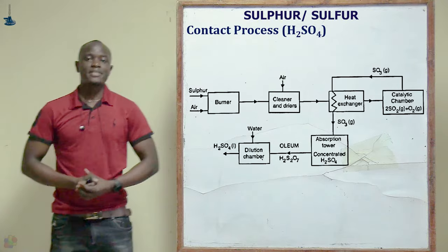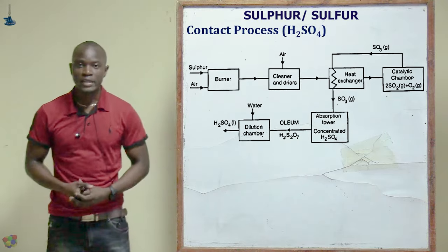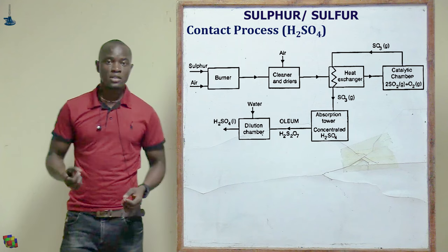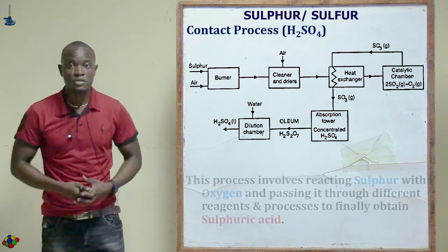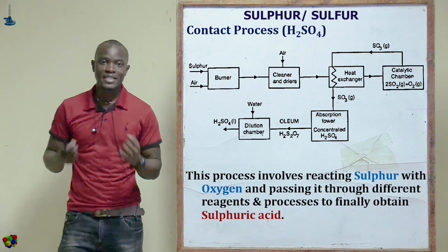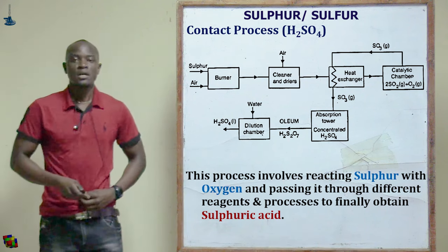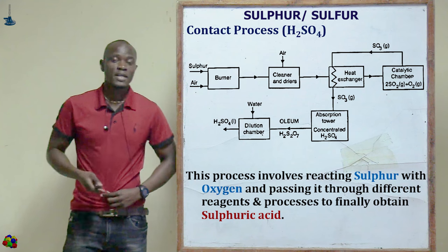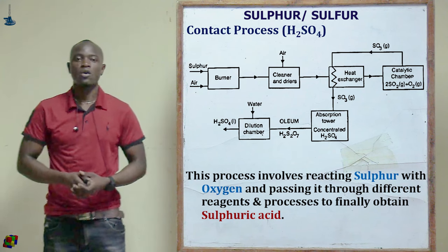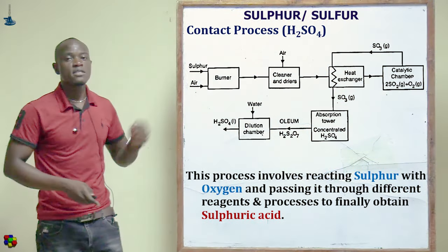Let's now look at large-scale manufacture of sulfuric acid, also referred to as the contact process. The raw materials for the manufacture of sulfuric acid in the contact process are sulfur oxide and oxygen gas.